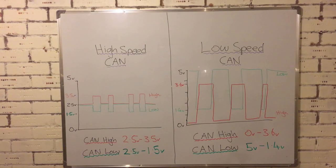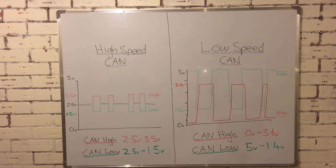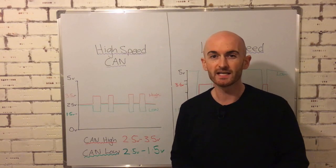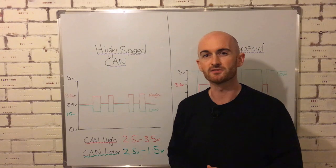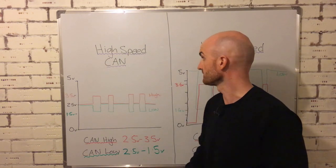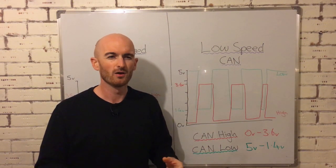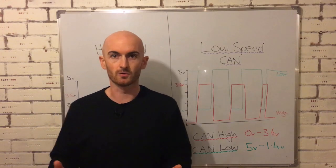On the high-speed CAN network, CAN high we've got 2.5 volts to 3.5 volts and CAN low 2.5 to 1.5 volts. On the low-speed CAN network CAN high operates from 0 volts to 3.6 volts, and CAN low operates from 5 volts down to 1.4 volts. The easy way to know if you're looking at CAN high or CAN low: the voltage of CAN high always goes up from its resting voltage. Generally high-speed CAN systems are found on powertrain or chassis systems where a large amount of data is required. Low-speed CAN we usually find on body systems, however on newer vehicles we tend to find that it's all high-speed CAN.